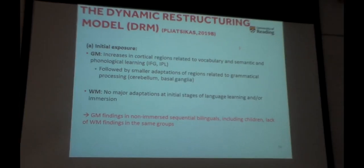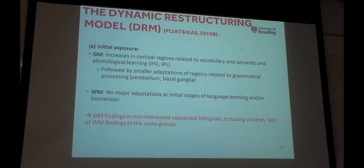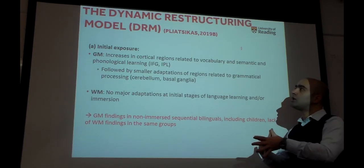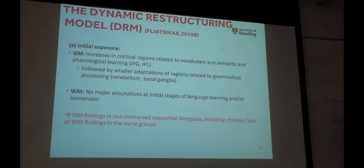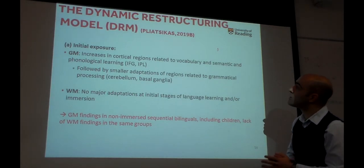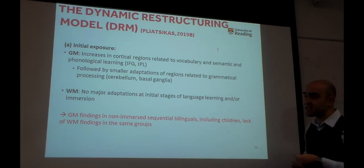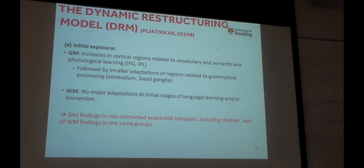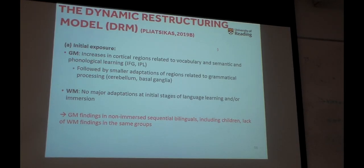Putting everything together, I came up with what I call the Dynamic Restructuring Model, or DRM, which encapsulates all the evidence that looked quite contradicting. At initial exposure — when you first start learning the language, or you know the language but haven't really started using it in real life — the effects are in the gray matter, in cortical regions related to vocabulary, semantic, and phonological learning. Then as you become a bit more experienced using the language, or learn more things about the language, you get increases in structures that undertake grammatical processing, because you're not yet experienced in doing this. This covers the gray matter findings on all groups with limited experience of everyday use.